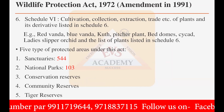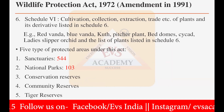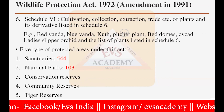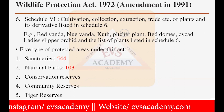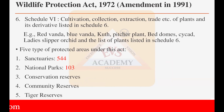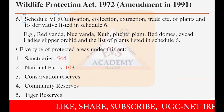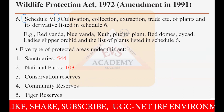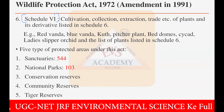Schedule six covers cultivation, collection, extraction, and trade of plants and their derivatives. Examples include red vanda, blue vanda, pitcher plant, cycad, and lady's slipper orchid. All these plants are getting protection under schedule six of the Wildlife Protection Act 1972.